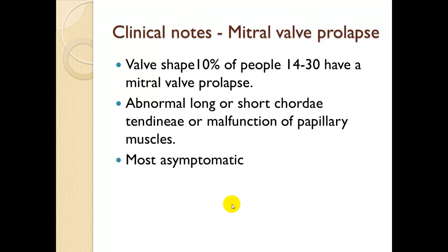Clinical note — mitral valve prolapse: about 10% of people may have a mitral valve prolapse. Abnormal, long, or short chordae tendineae, or malfunction of the papillary muscles, can cause a mitral valve prolapse. Most cases are asymptomatic. A little regurgitation doesn't cause harm, but significant regurgitation back into the previous chamber can become problematic.